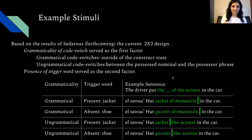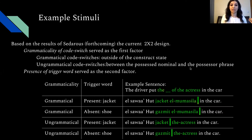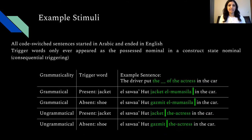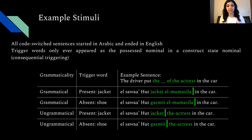So to reiterate: grammatical code switches had the switch location outside the construct state, while ungrammatical ones had it within. The second factor was presence or absence of a trigger word. In this experiment, all code switch sentences started in Arabic and ended in English, and trigger words only appeared as the possessed nominal in the construct state, so I was only looking at consequential triggering.